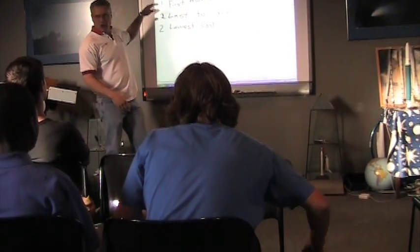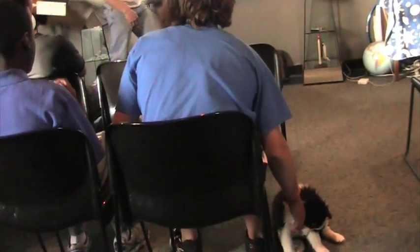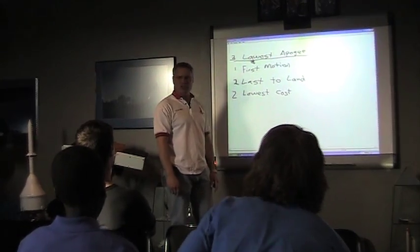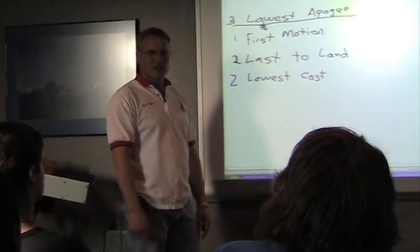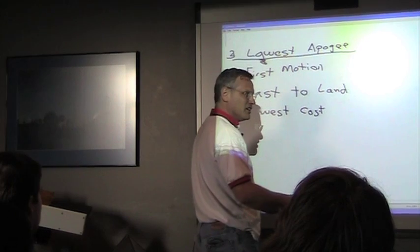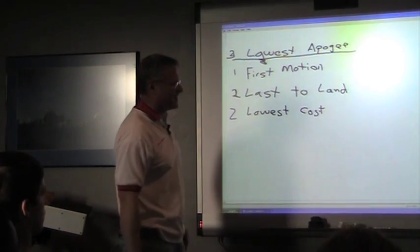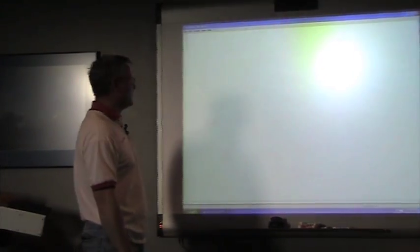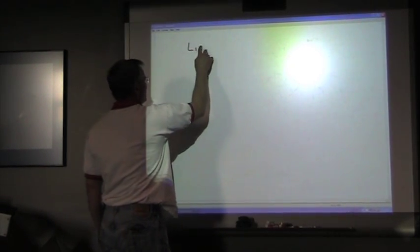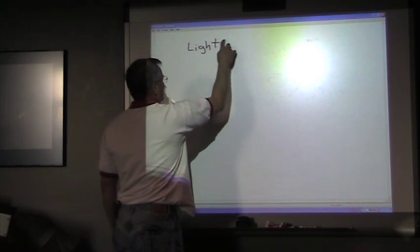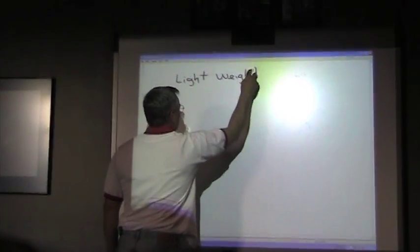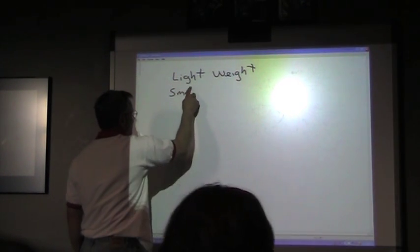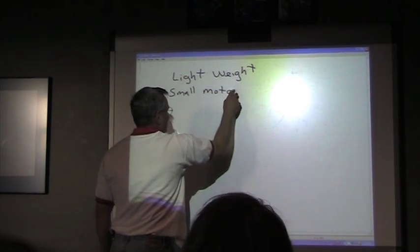Okay, so which one's most important? Lowest apogee. How are we going to design a rocket for lowest apogee? Lightweight, small motor. Okay, lightweight and small motor.